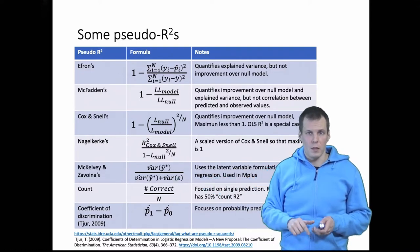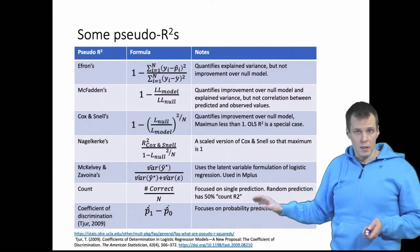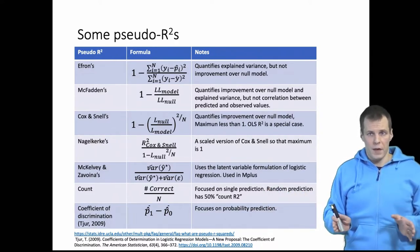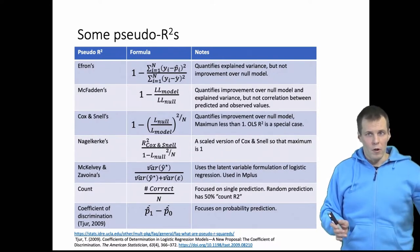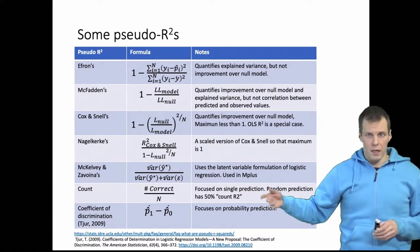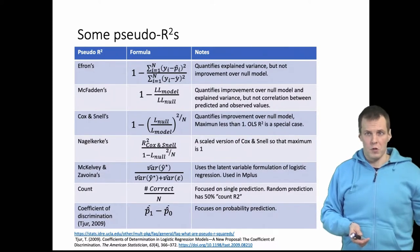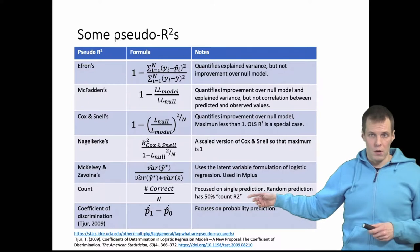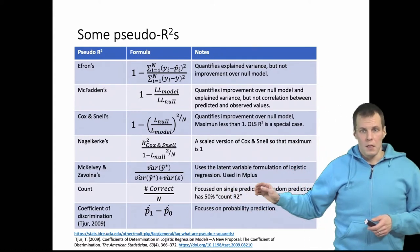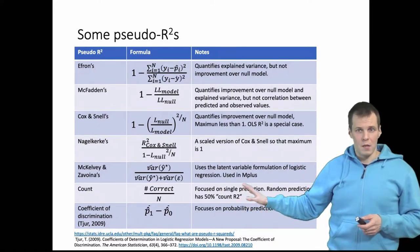I have another video explaining the latent variable interpretation. Then we have two statistics that quantify how well the model predicts. The count R squared classifies each observation into the most likely category: if the predicted probability is 51%, the predicted value is one; if it's 49%, the predicted value is zero. You then calculate how many predictions are correct and divide by sample size. If you predict randomly, count R squared will be 50%, so it will almost never be below 50%.